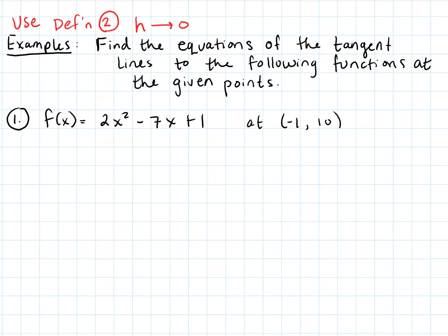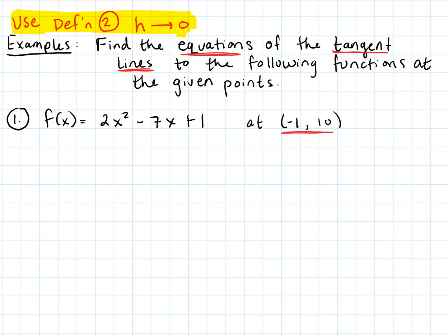For these next two examples, I want to use our second definition — the definition where H goes to zero. Sometimes it'll be specified which definition to use; other times you get to pick. They're both equally valid. But I also want to make sure you know both definitions and can use both. So for these examples, we'll specifically use the second definition. If we want to find the equation of a tangent line — not just the slope, but the full equation — we start with this function, a parabola, at the specific point negative 1, 10.